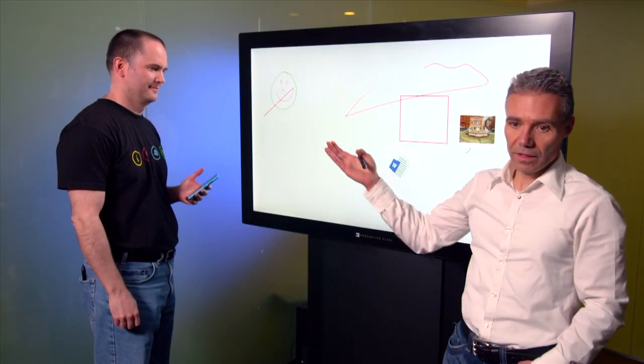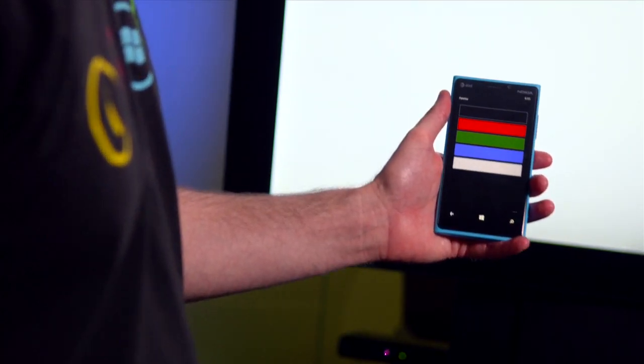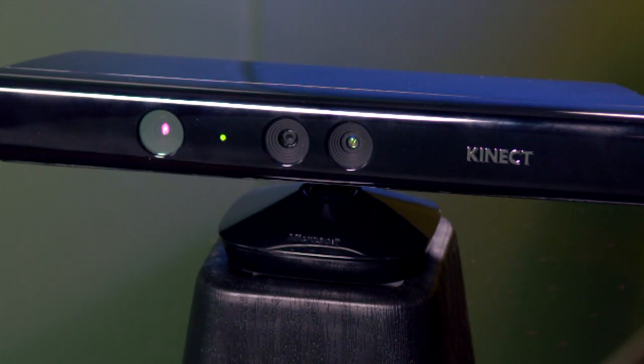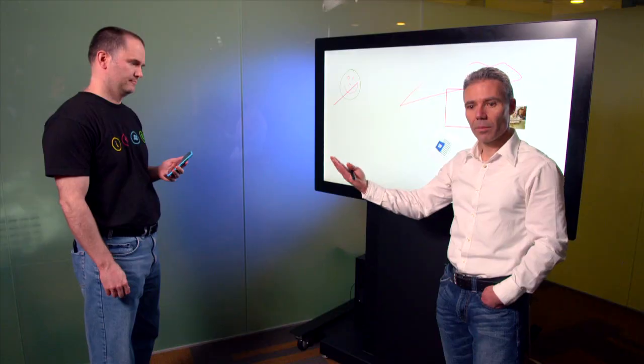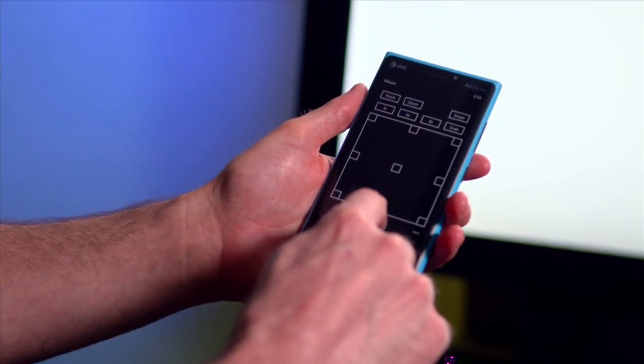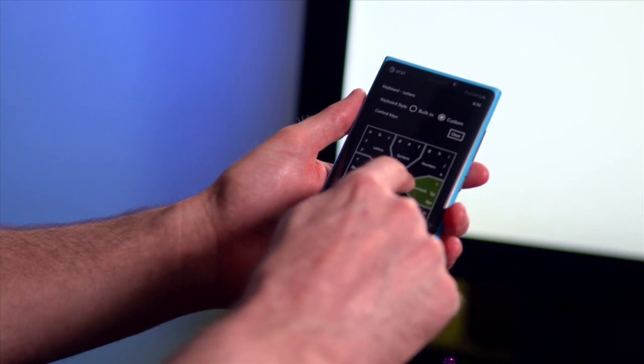If Jason now steps away from the display, Kinect can inform the phone and the UI on the phone changes based on that. From here, we're going to launch the keyboard and go into the Windows start screen.